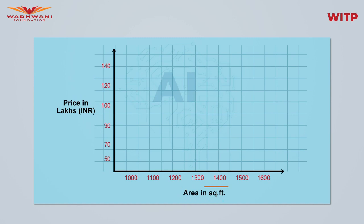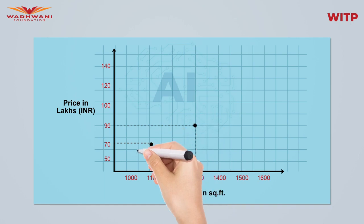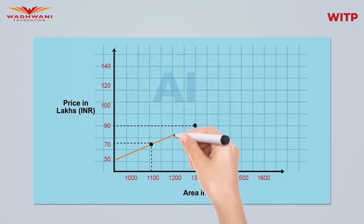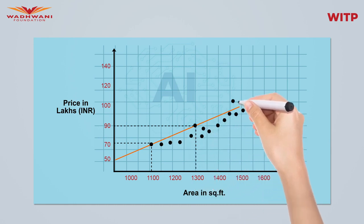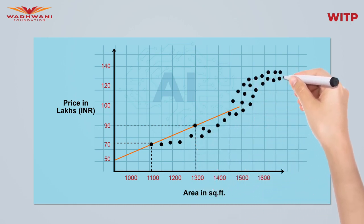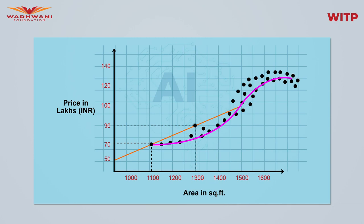Let's understand this with an example. Suppose we want to find the relationship between house prices and house area in New Delhi. We feed data to our algorithm — for house number one, this is the area and this is the price; similarly for house number two. With just two data points, our model may say there is a straight-line relationship. But as we feed more and more data, the algorithm may update and say this relationship is closer to an S-shaped curve. So we see that our machine learning algorithm is dynamic.